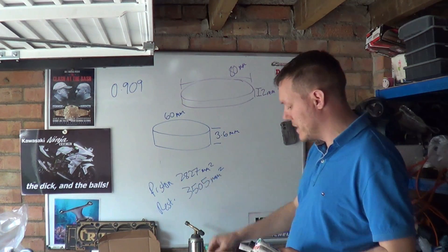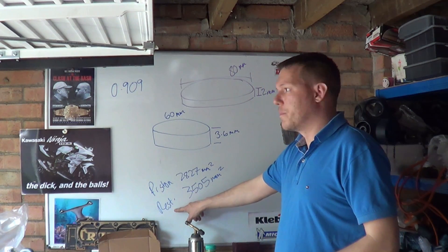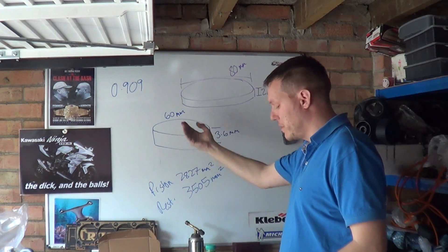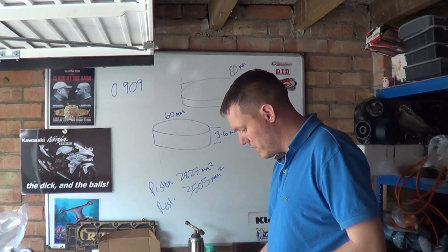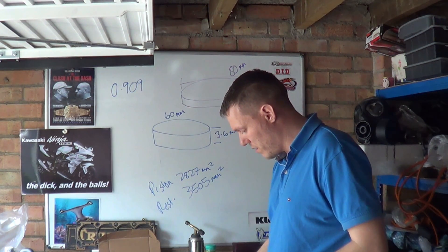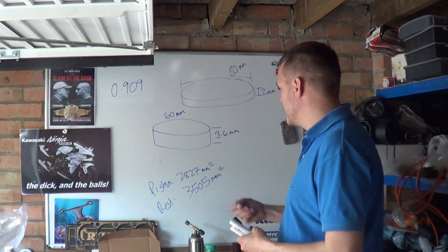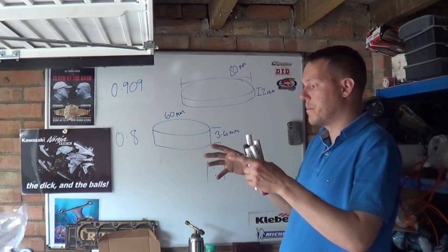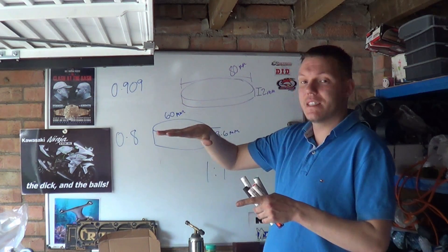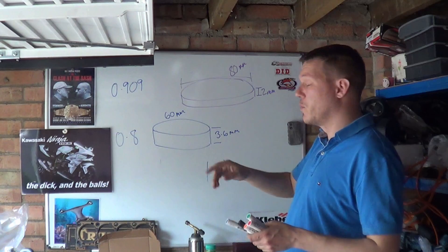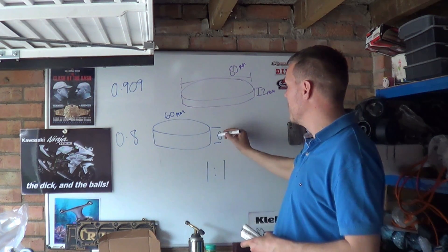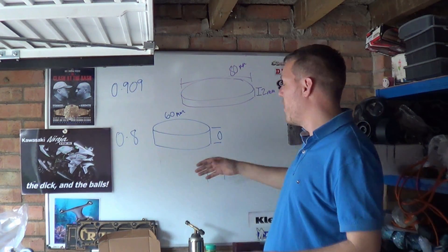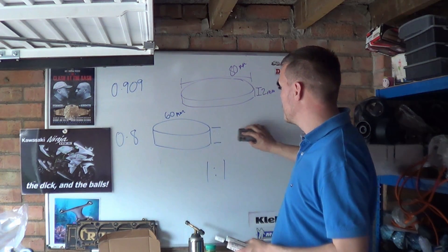We've got our piston surface area of 2827 and everything else is 3505. If we divide 2827 by 3505, we get 0.8. What we're looking for is a one-to-one ratio - that means the piston surface area is the same size as the top of our combustion chamber. The only way you could do that is if this clearance height was zero, so it's just two cylinders laid flat on top of each other. Obviously we can't have that because we have to have some volume for combustion.